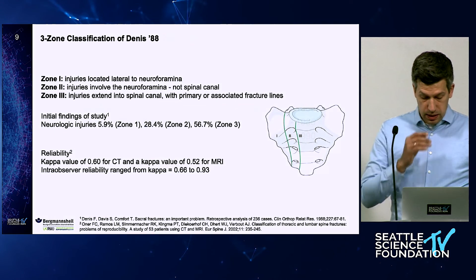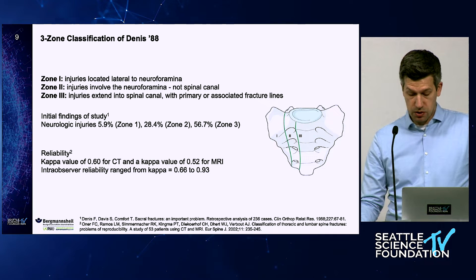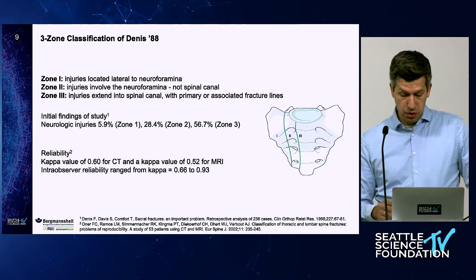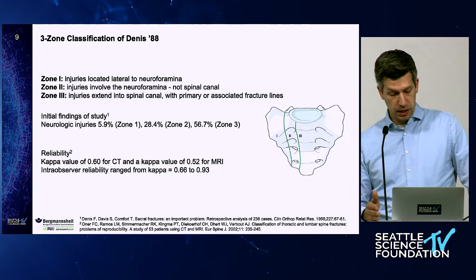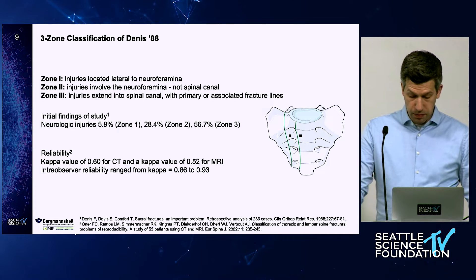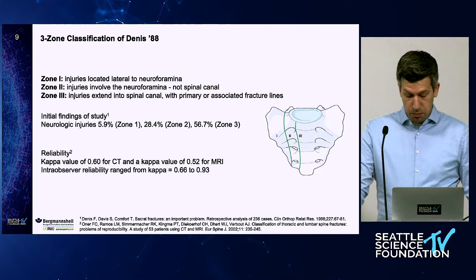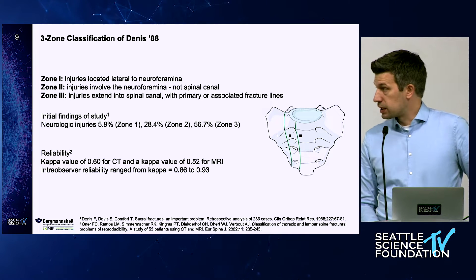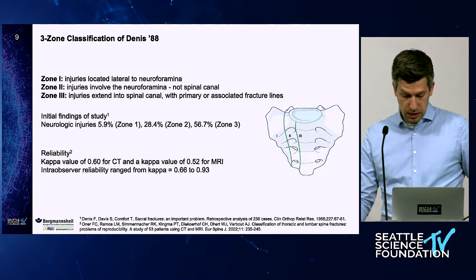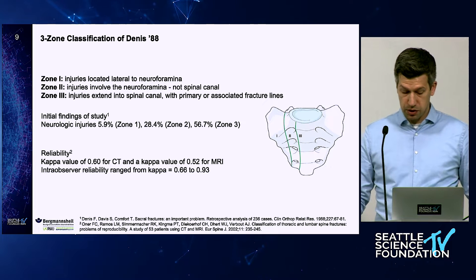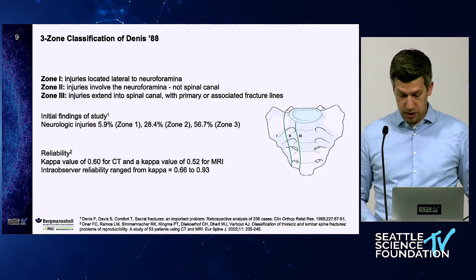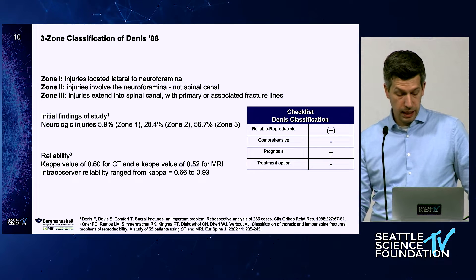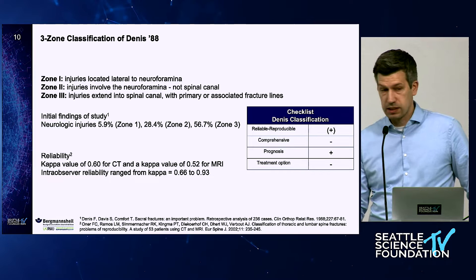The Dennis classification is kind of the bread-and-butter classification for many surgeons. It looks only at the coronal plane and judges fractures by their position relative to the neuroforamen in three zones: lateral, medial, or through the neuroforamen. It provides information about neurologic injuries — the highest rate of neurologic injury is in zone three, due to extension into the spinal canal. However, it is not comprehensive, as it only considers one plane.